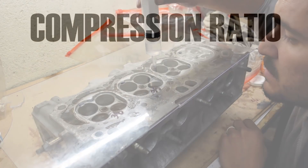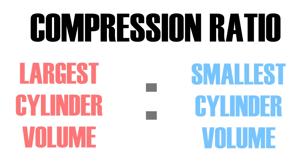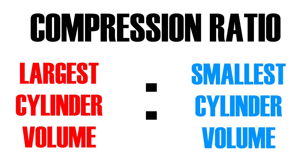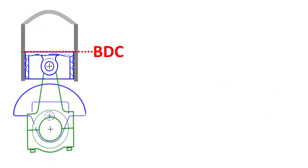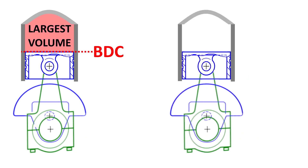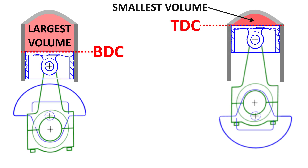As you may know, your engine's compression ratio is the relationship between the largest and smallest volume of your cylinder. The largest volume is achieved when your piston is at bottom dead center, while the smallest volume is achieved when the piston is at top dead center.